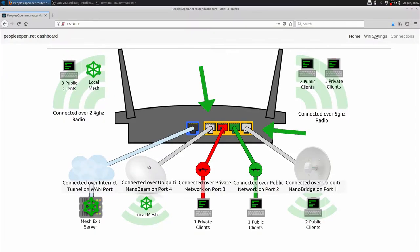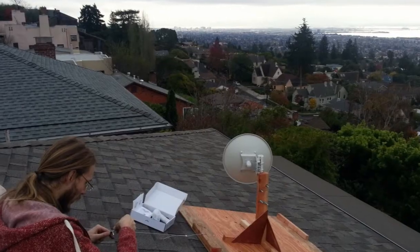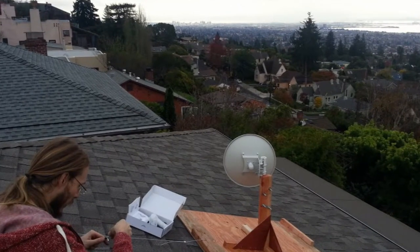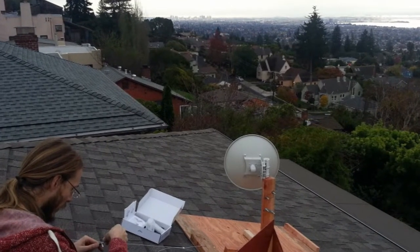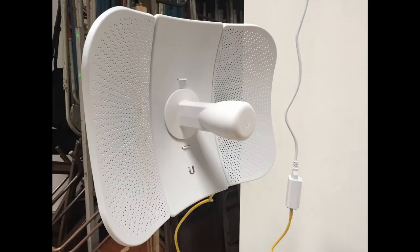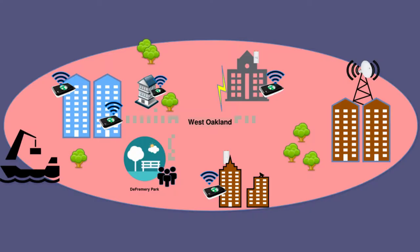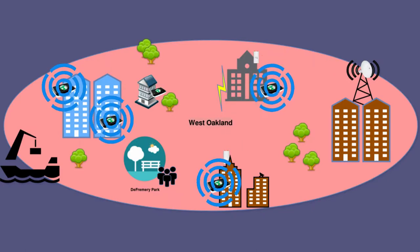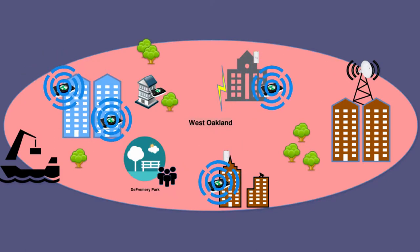The two outer Ethernet ports, one and four, are for extender nodes. Extender nodes are directional, long-range, point-to-point devices that can be mounted on rooftops. Extender nodes connect distant, isolated home nodes together, while home nodes spread the signal omnidirectionally for local use.